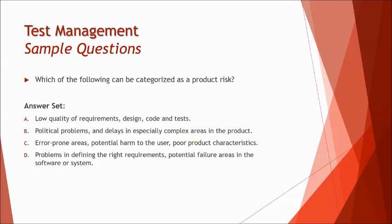The next question is about product risk. We had two types of risk: project risk and product risk. Option A — low quality of requirements, design, code and test — is a project risk. Option B — political problems and delays in complex areas — is also a project risk. Option C — error prone areas, potential harm to the user, poor product characteristics — these are collectively product risk, things that harm end users post-release. So C is the product risk answer.